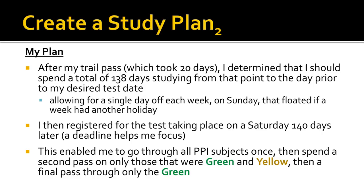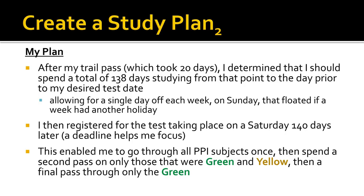As soon as I had that all worked out, I immediately registered for the test. It can be changed but it will cost a little money, so this gave me focus — a deadline to shoot for. I didn't have to change it. This enabled me to go through all the PPI subjects in those 138 days at least once. I spent a second pass on only the material highlighted in green and yellow. The first pass I did all three — green, yellow, red — with basically every section; the second pass I did only green and yellow; and the final pass I did only the green.